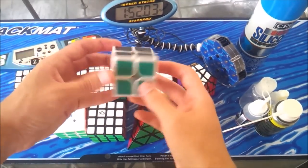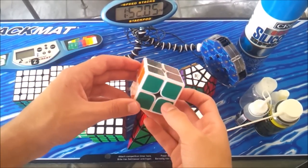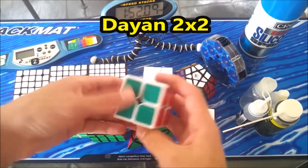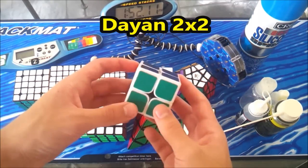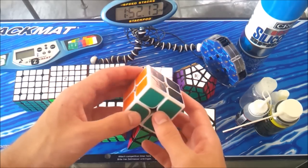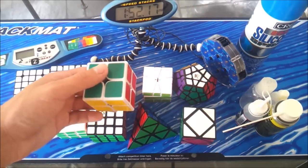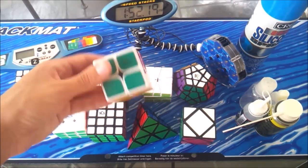All right. So first up is my two by two. I use a Dayan two by two. It's just white plastic and it's got the standard Dayan stickers. There's nothing too special about it. That's pretty much it. It's been my main two by two for about a year or so, I think.